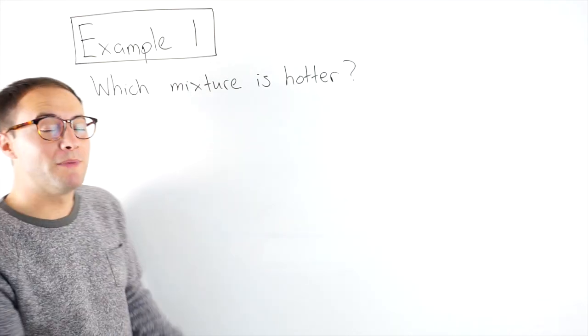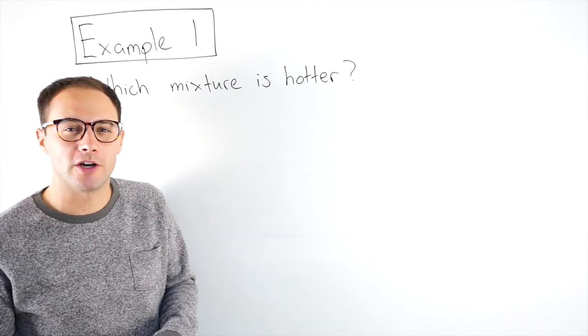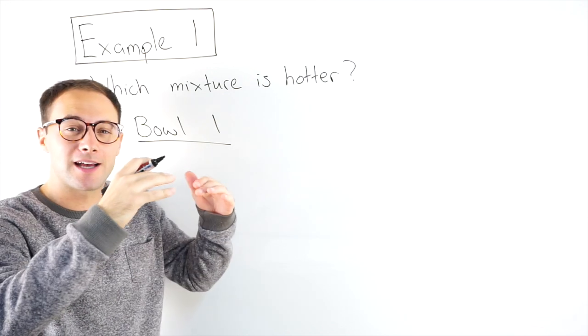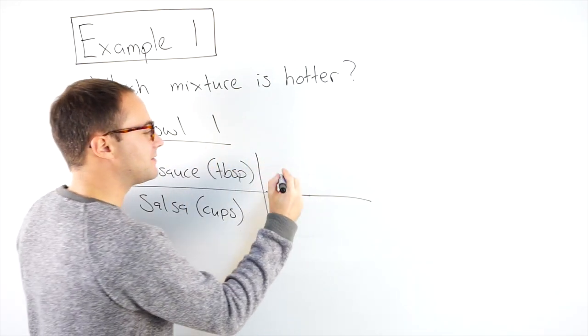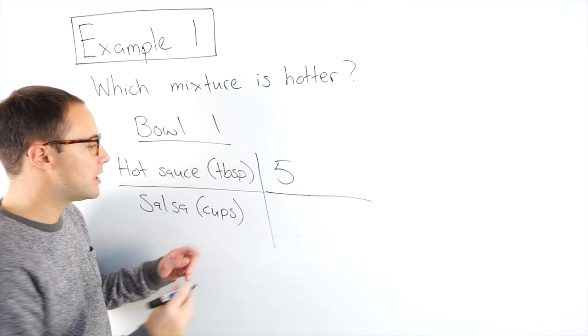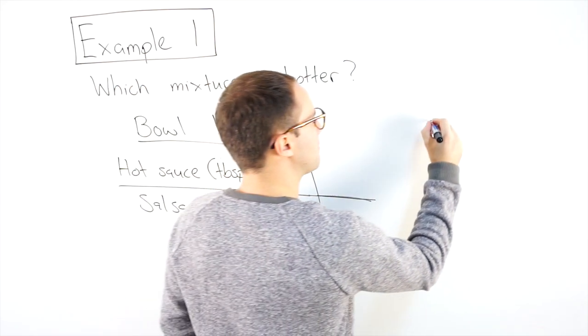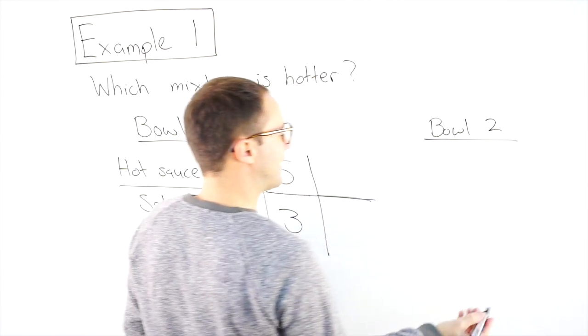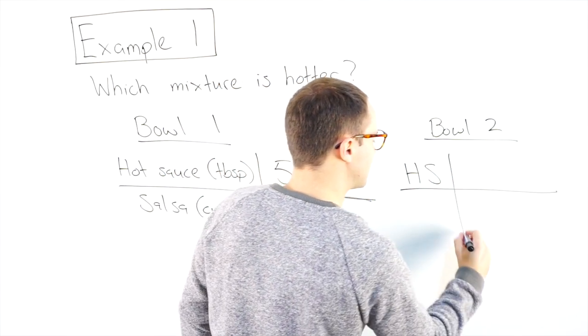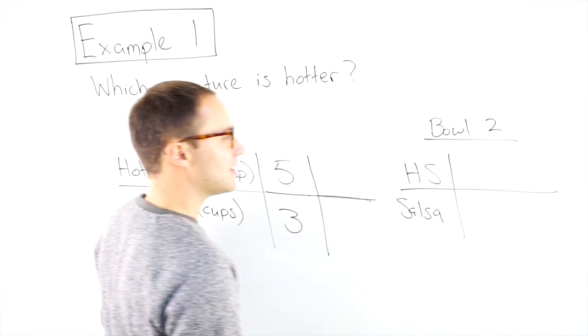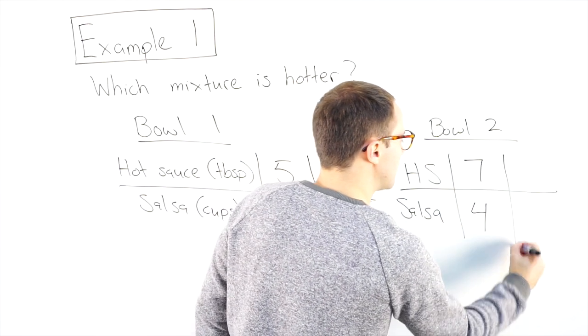Example one, which mixture is hotter? That's what we're trying to figure out. We're comparing two different ratios, comparing hot sauce and salsa. In the first bowl, we had five tablespoons of hot sauce for every three cups of salsa. Bowl two, I'm going to have seven tablespoons of hot sauce for every four cups of salsa.